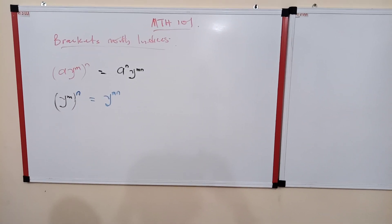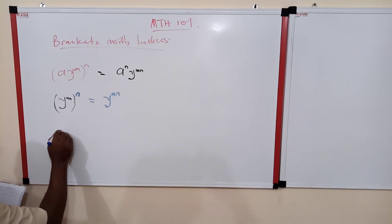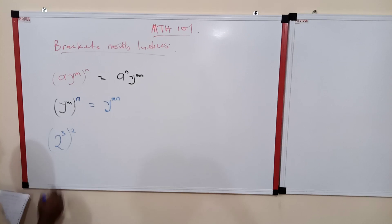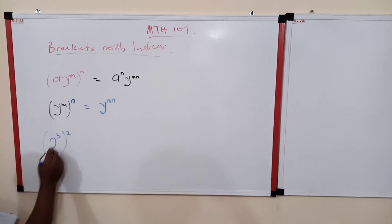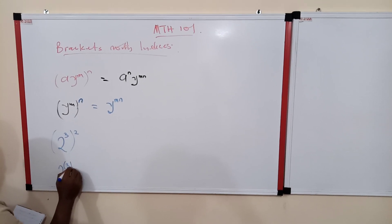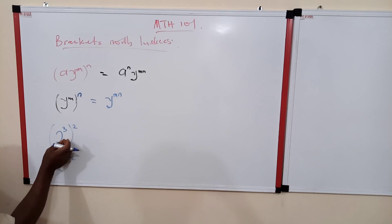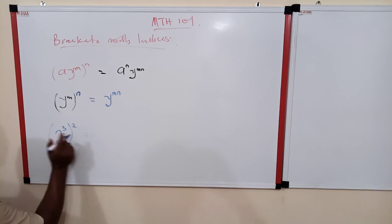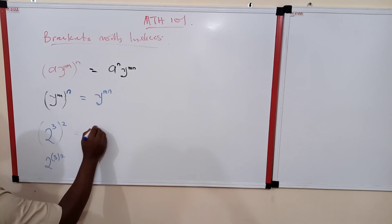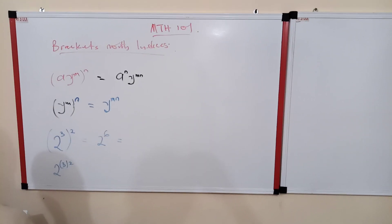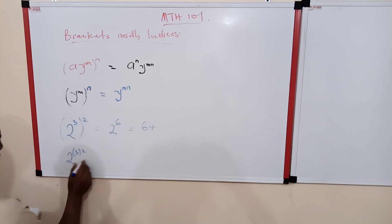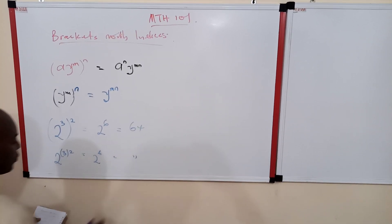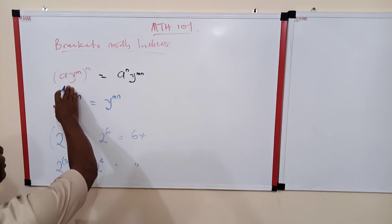Let's consider a case: if you have 2 raised to power 3, all raised to power 2. This expression can also be written as 2 raised to power (3 × 2). All you need to do is multiply the powers, giving you 2 raised to power 6, which equals 64. Both forms give the same result — 2 raised to power 6.